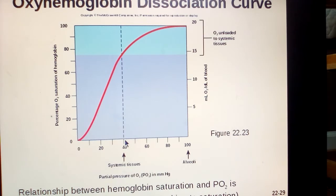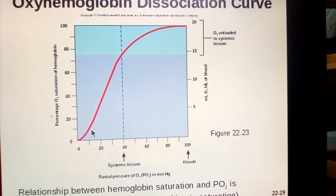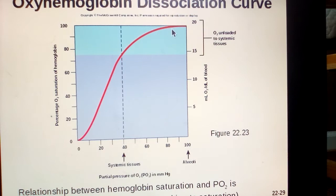Changes in PO2 in the lungs have minimal impact on hemoglobin. But changes in PO2 in the tissue have a really huge impact on the hemoglobin's ability to unload oxygen. If PO2 in the tissue drops a bit, the hemoglobin unloads a whole lot more oxygen. PO2 in the lungs changing a little bit doesn't do much.